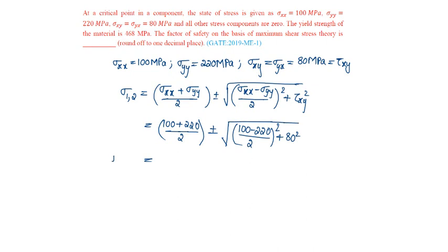When we write plus we get sigma 1 and when we write minus we get sigma 2. Sigma 1 is obtained as 260 megapascals, sigma 2 is 60 megapascals, and the other stress sigma 3 will be 0.